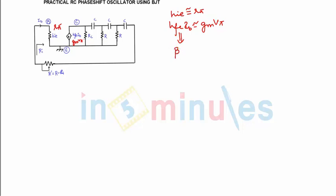And h_fe is nothing but beta, that is the gain of the transistor. This we can find from the multimeter also - we can find the value of h_fe.